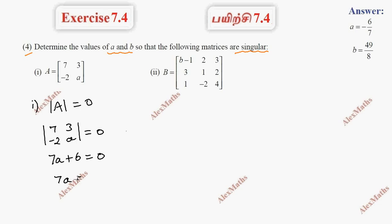7a is minus 6, so a equals minus 6 by 7. Now subdivision b.